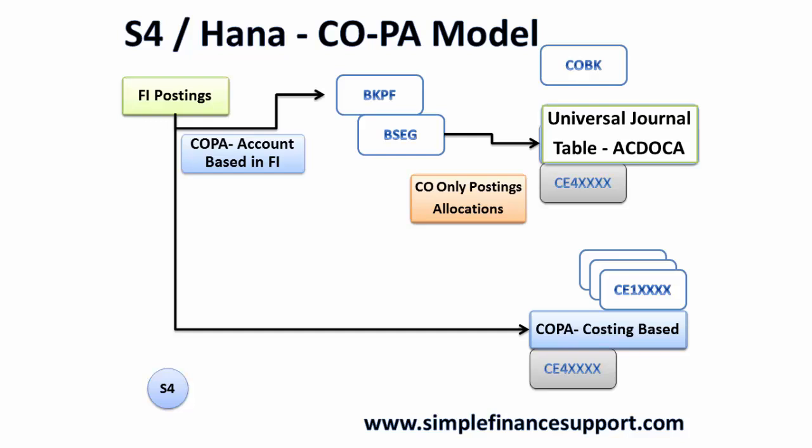There is a significant difference for CO-only postings in S/4 HANA: there is no longer such a thing as a purely CO-only posting. All postings now also reflect in accounting via the BKPF tables and the universal journal. For COPA account-based, cost center allocations will go into account-based automatically. For COPA costing-based, the data still flows into the COPA costing tables — there is no change there.